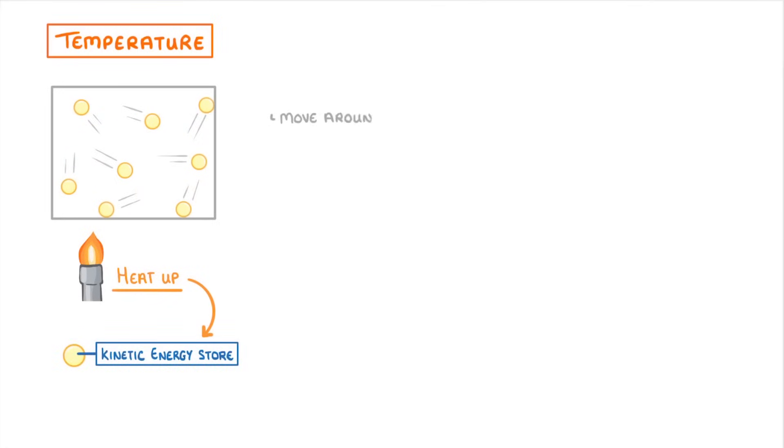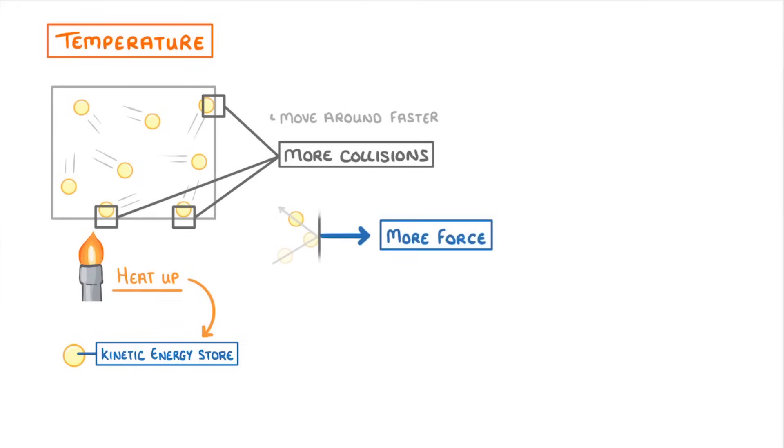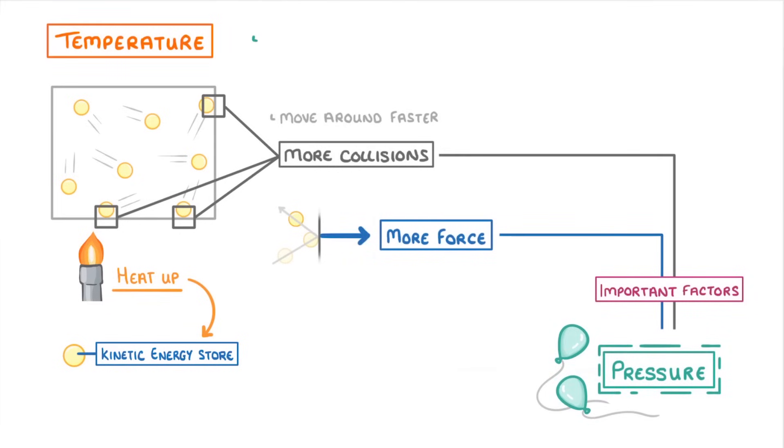Let's start with temperature. If we were to heat up our gas, we would be transferring energy to the particles' kinetic energy stores. So all of our particles would start to move around faster. And because they're all moving around faster, there would be more collisions with the walls of the container, and each individual collision would involve more force. As these are the two important factors that determine pressure, we can be sure that pressure increases with temperature.